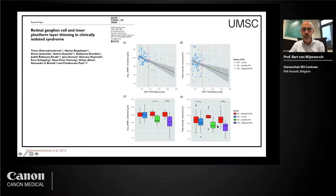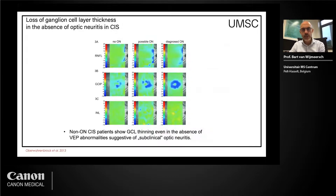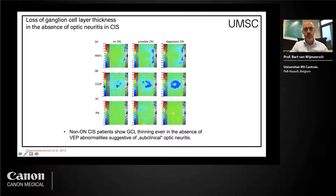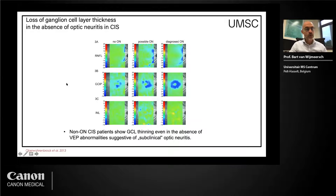Total macular volume will also be decreased. They made different maps of the whole retina and looked at retinal nerve fiber layer, ganglion cell inner plexiform layer, and inner nuclear layer. One of the most sensitive layers was the ganglion cell layer that seems to be thinning even in patients who have no optic neuritis and no abnormality on visual evoked potential. So the first way you can see early changes is probably the ganglion cell layer.